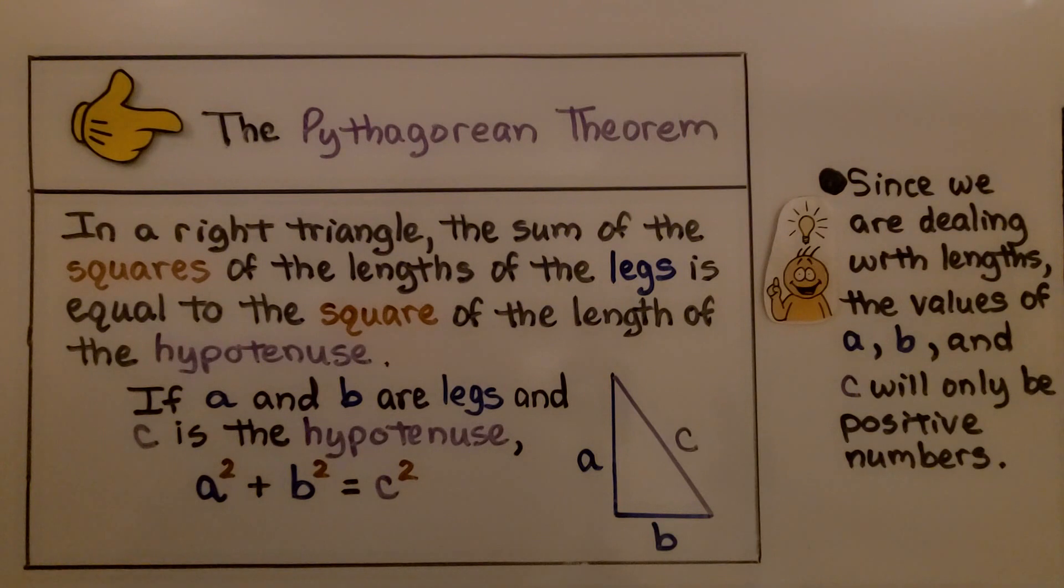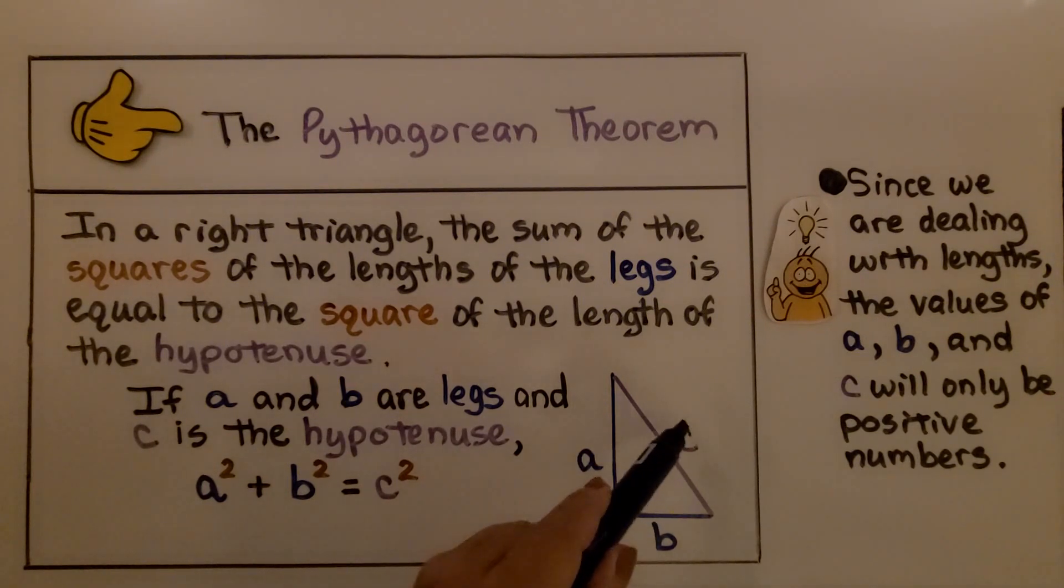So remember the Pythagorean theorem is a squared plus b squared equals c squared. It's one leg squared plus the other leg squared is going to equal the hypotenuse squared. And remember that since we're dealing with lengths, all the values of a, b, and c will be positive numbers because lengths are positive numbers.